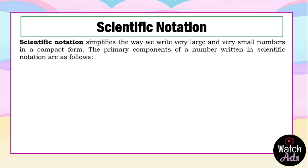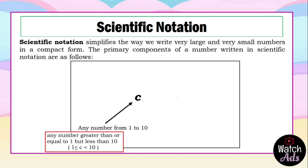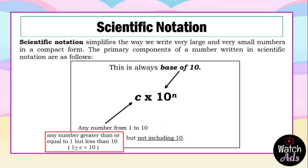Scientific notation simplifies the way we write very large and very small numbers in a compact form. The primary components of a number written in scientific notation are: C, which is any number greater than or equal to 1 but less than 10 — this is the coefficient or numerical coefficient — multiplied by 10 raised to n, where 10 is always the base, and n must be an integer and is also the exponent of base 10.